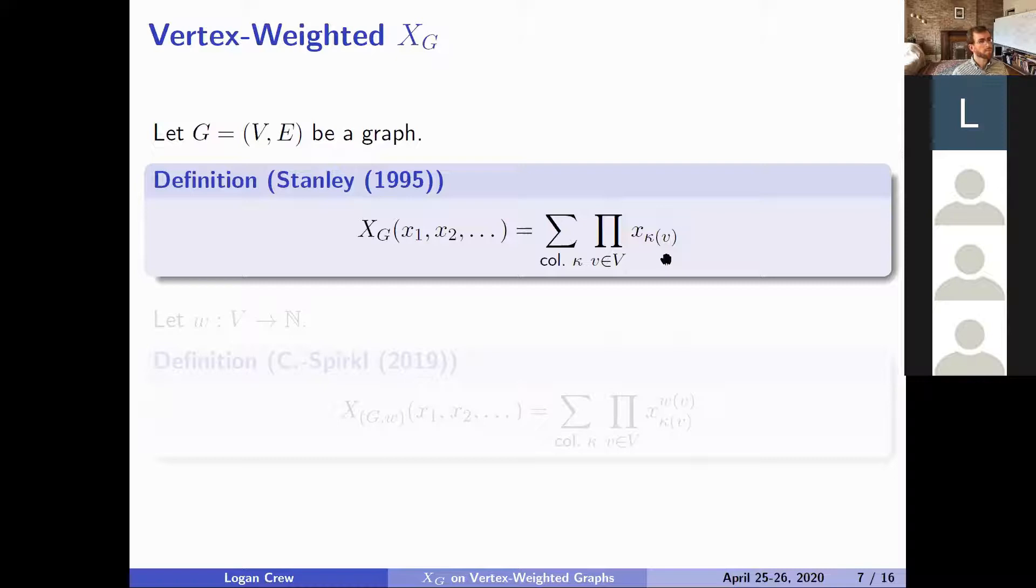When you contract an edge, this reduces the number of vertices. So X of G contract E would be some function on degree n minus one. And there's not a really good way to fix that in general. There have been attempts made and there are various kind of modular relations, but not a true deletion contraction relation.